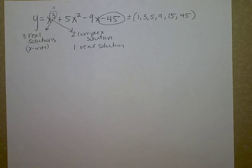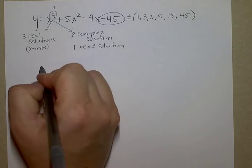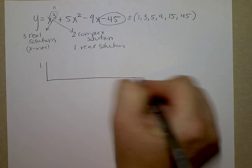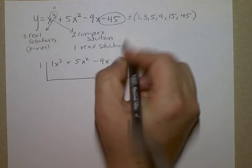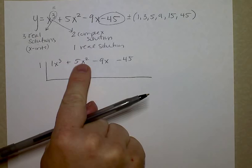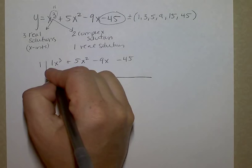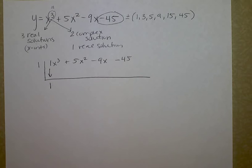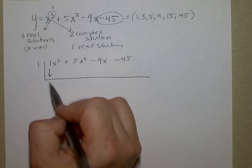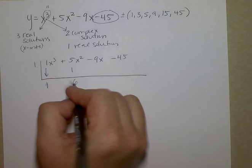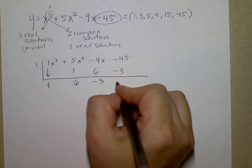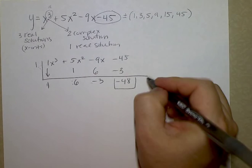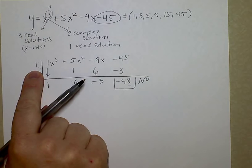I don't want you to write down the first part. You're going to practice when I ask you to. I'm going to start by testing positive 1. Please don't write this down. I put in the x's just as placeholders. So you always bring down the first number. Then we follow multiply, add, multiply, add. Does this work? No, because this number is not zero. That means that x equals 1 is not an answer.